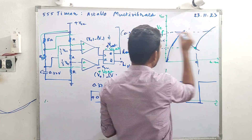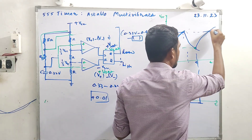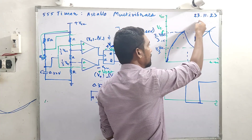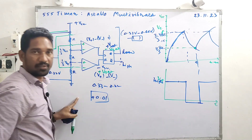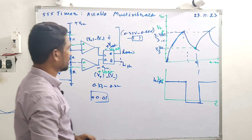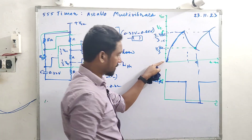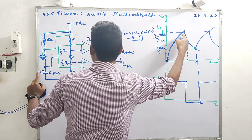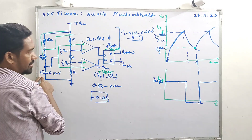This cycle repeats. The capacitor voltage oscillates between one-third VCC and two-thirds VCC — never truly going to 0 or VCC. The charging and discharging repeats, giving a continuous oscillation. Very important: capacitor charges through R-A, R-B, and C. Capacitor discharges through R-B and C only. That's it.